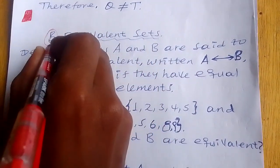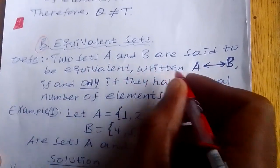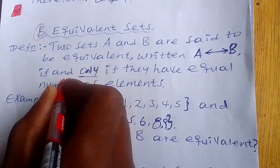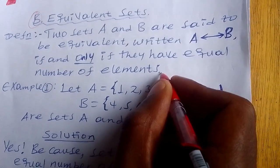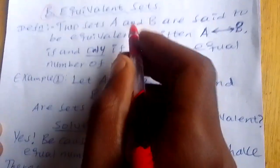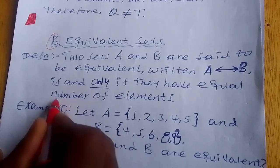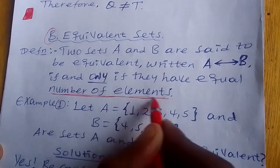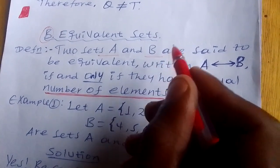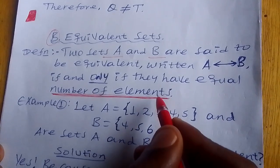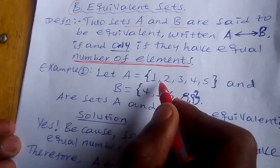B: Equivalent Sets. Definition: Two sets A and B are said to be equivalent, written as A is equivalent to B, if and only if they have equal number of elements only.